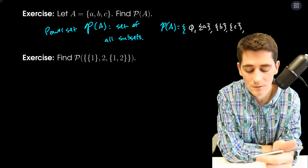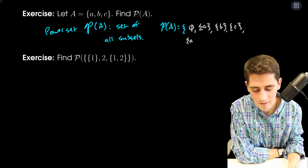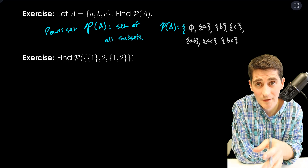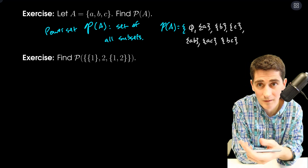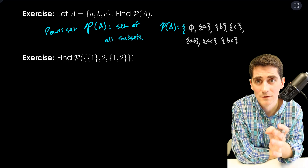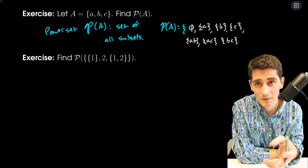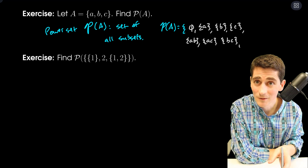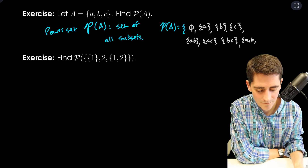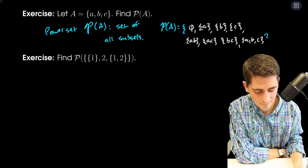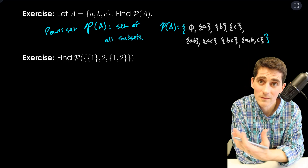Now I need to go to cardinality two. I could do {A,B}, {A,C}, {B,C}. Remember, with sets the order doesn't matter, so {C,A} and {C,B} are already included. Lastly, I have the set A itself — the subset of cardinality three. Technically, a set is considered a subset of itself.